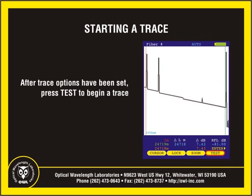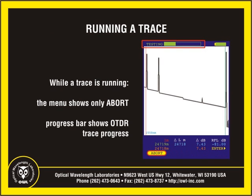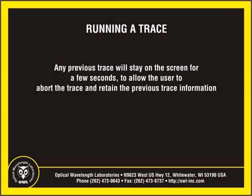Once the trace options have been set, press the test function button. During the OTDR test, the function options menu will temporarily show abort, all other soft keys are disabled, and a progress bar appears at the top of the OTDR display. Note: when starting a new trace, the old trace will remain on the screen for a few seconds while the OTDR gathers enough trace data to display the new trace. This gives the user some time to abort the trace if necessary and preserve the previously loaded trace.